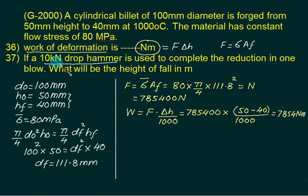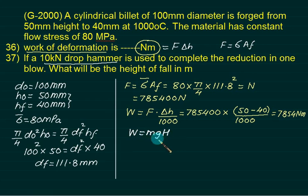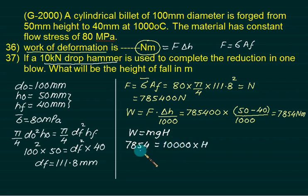To find the height of the drop hammer, equate work done with MGH, where H is the drop height. Work done is 7,854 N·m and the hammer weight is 10,000 N (10 kN). So height H = 7,854 / 10,000 = 0.7854 meters.